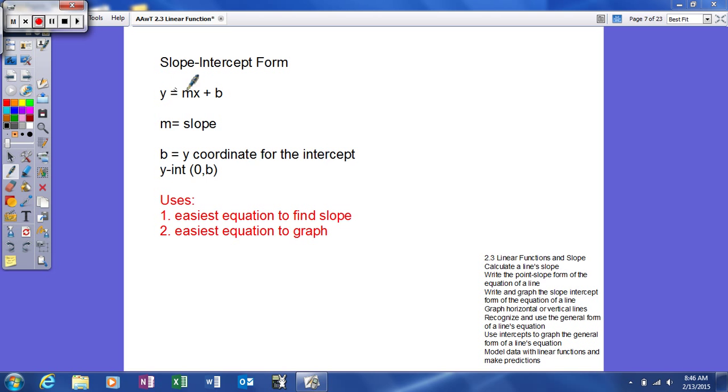To know that you're in slope-intercept form, here's what you need to know. y has to be by itself. So if you want to be in slope-intercept form, get y by itself. What that should tell you is that the coefficient of your x variable is the slope, and your constant is going to be the y-coordinate for the y-intercept.